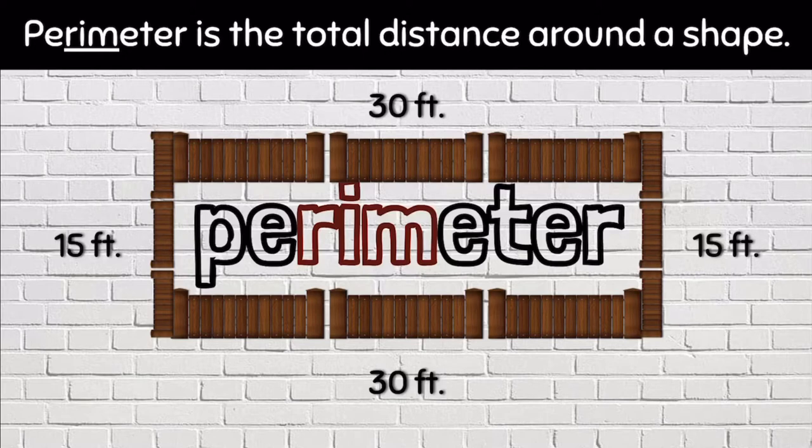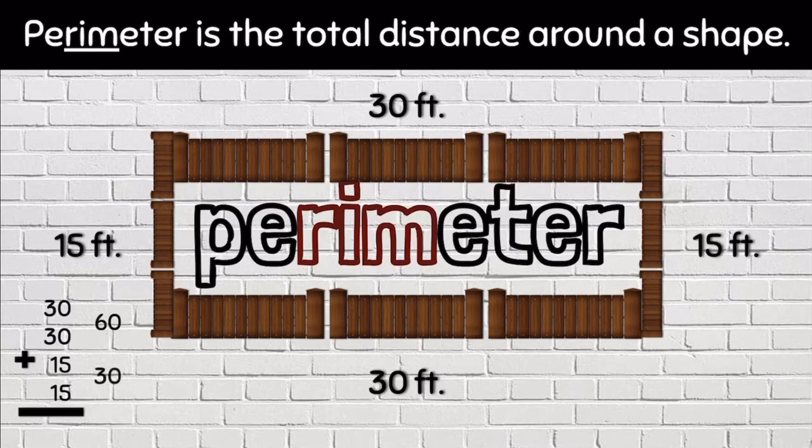We will find the total by adding. Let's add 30 plus 30 plus 15 plus 15. We know that 30 plus 30 is 60 and we know that 15 plus 15 is 30. 60 plus 30 makes 90. That means that the perimeter is 90 feet.